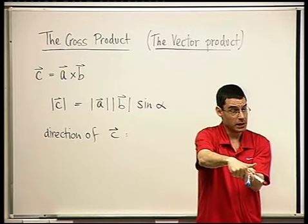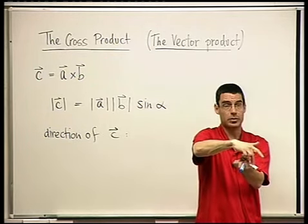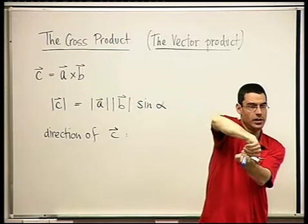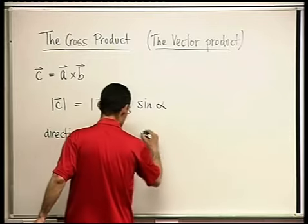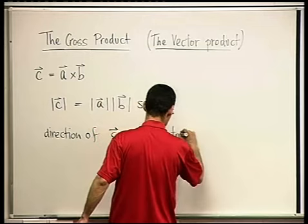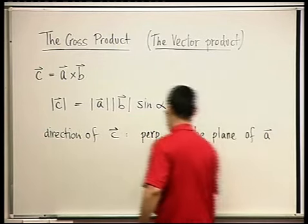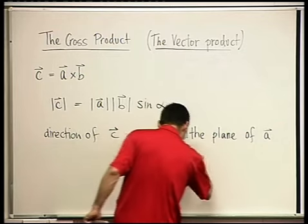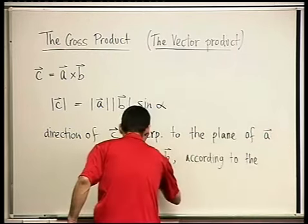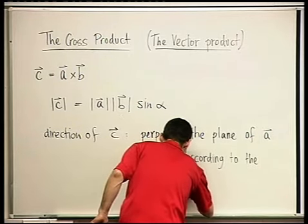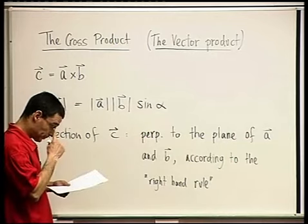Now suppose this was A and this was B the other way around. If I want to point my fingers from A to B, I have to do it differently, and then C goes the other way. So the direction of C is perpendicular to the plane of A and B, according to the so-called right-hand rule.